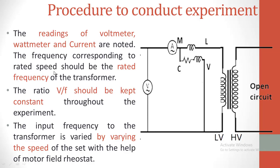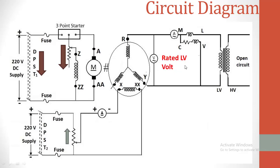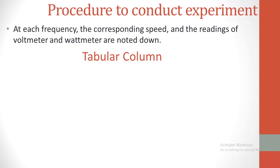The frequency corresponding to rated speed will equal the rated frequency of the transformer. The ratio of V/F is maintained constant throughout the experiment. The input frequency to the transformer is varied by varying the speed of the set with the help of the motor field rheostat. Do the same thing for two or three different speeds. At each frequency, the corresponding speed and the readings of voltmeter and wattmeter should be noted in the tabular column.